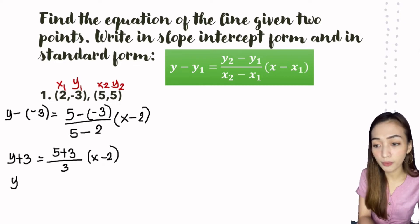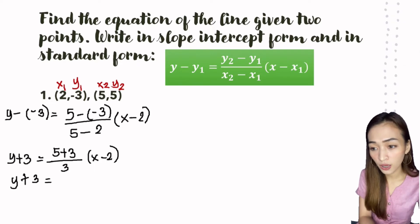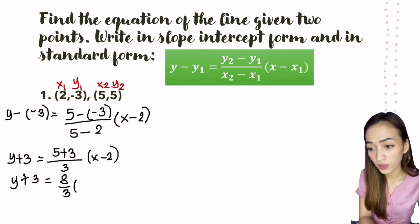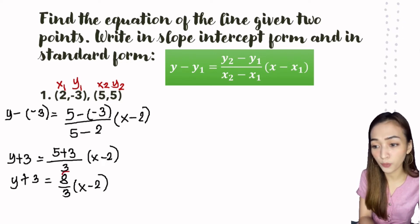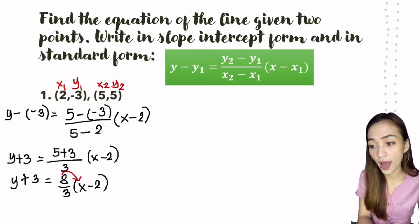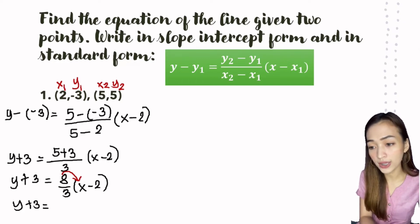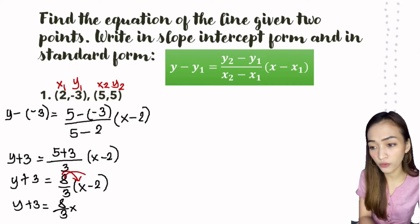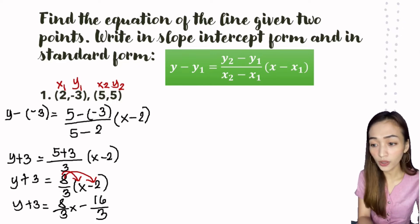Next, perform the operations. So y plus 3 equals 8 over 3, times (x minus 2). Then let's use the distributive property: y plus 3 equals (8/3)x, and 8/3 times negative 2 is negative 16/3.